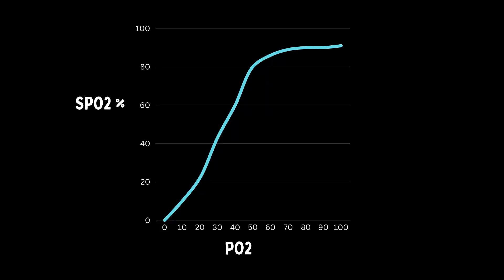This is the oxygen-hemoglobin dissociation curve. It shows the relationship between the partial pressure of oxygen, or PO2, and the oxygen saturation of the hemoglobin molecule — or as we know and love it in the pre-hospital world, the pulse ox.